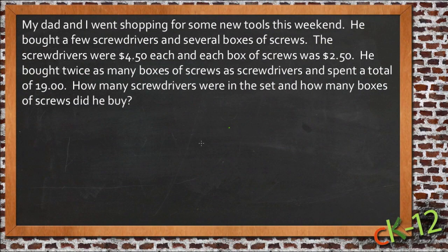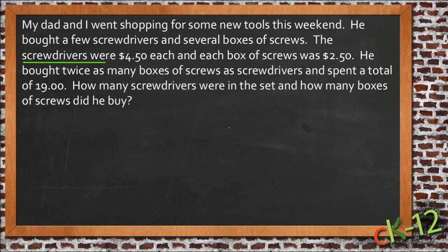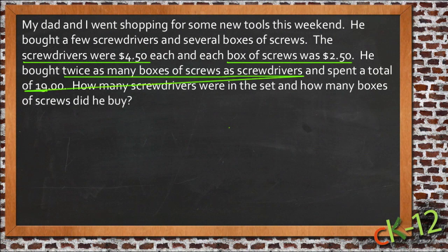Tom would like me to review a problem that he sent in. He was supposed to write a multi-step equation with a real-world basis. His question says that he and his dad went shopping for some new tools this weekend — he bought a few screwdrivers and several boxes of screws. The screwdrivers were $4.50 each and each box of screws was $2.50. He bought twice as many boxes of screws as screwdrivers and spent a total of $19. The question is: how many screwdrivers did he buy and how many boxes of screws?